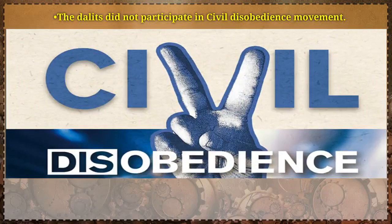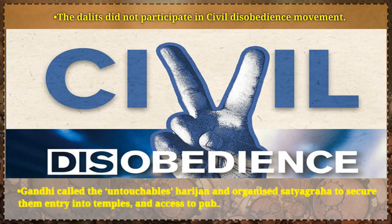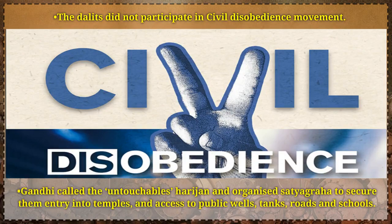The Dalits did not participate in the civil disobedience movement because for long the Congress had ignored the Dalits or untouchables. For fear of offending the Sanatanis — the conservative high-caste Hindus — Gandhi declared that Swaraj would not come for a hundred years if untouchability was not eliminated.